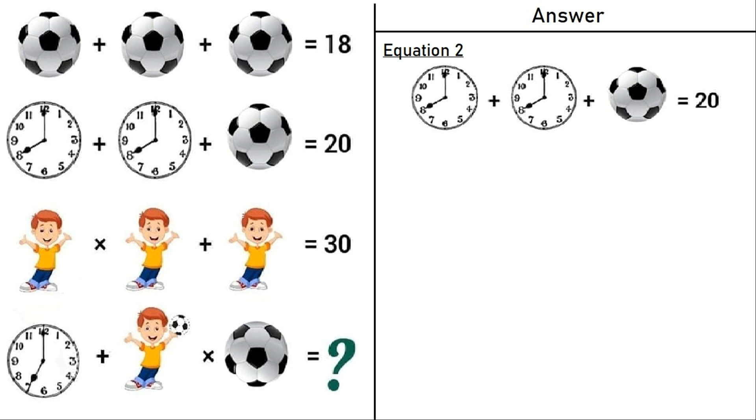Now moving on to equation number 2 which says a clock plus a clock plus a football is equal to 20. From equation 1, we have a football is equal to 6. Putting that in equation number 2, we have a clock plus a clock plus 6 is equal to 20. 7 plus 7 plus 6 is equal to 20.